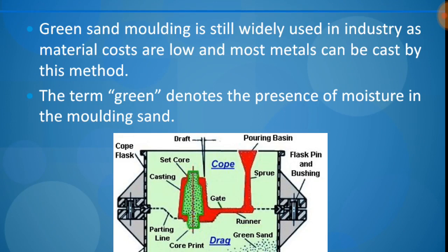Disadvantages of green sand molding: once a mold is prepared, it is used only for a single product and cannot be reused. The preparation time of the mold is also a tedious process, particularly when designing and positioning the core, runner, riser, gate, etc.